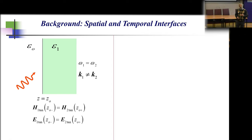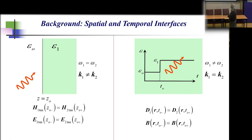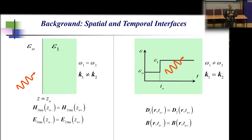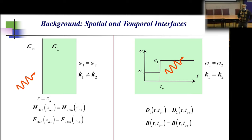What is the dual of that in time? The temporal interface equivalent is: imagine you have an unbounded medium with a wave propagating in it, and at t = t₀ you rapidly change the permittivity of that medium. That is a temporal interface. Its boundary condition requires that vector D must be continuous just before and just after the rapid change of permittivity.